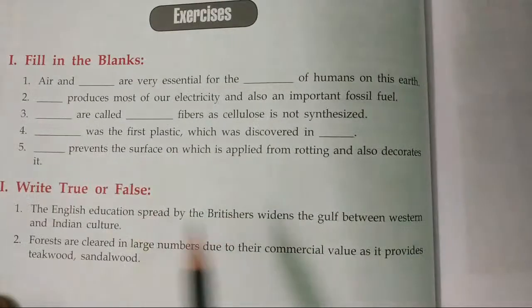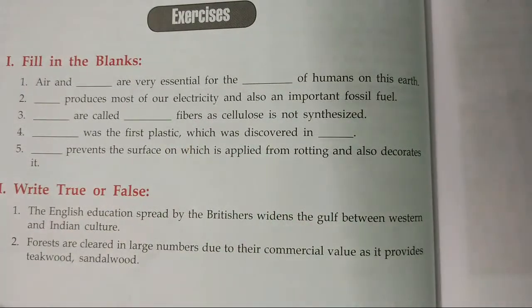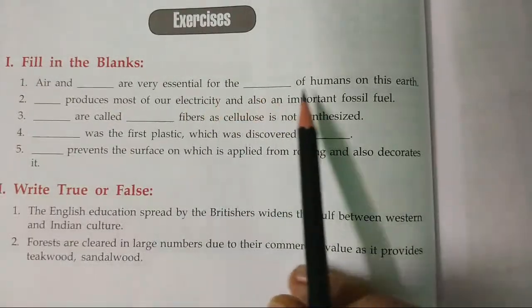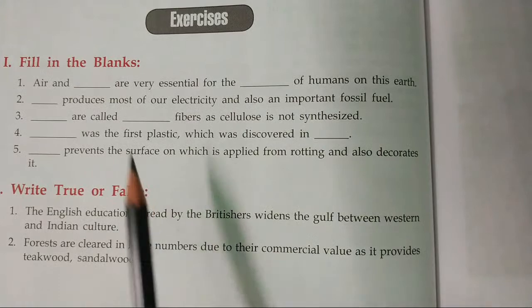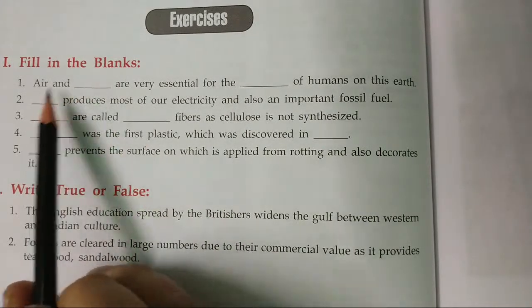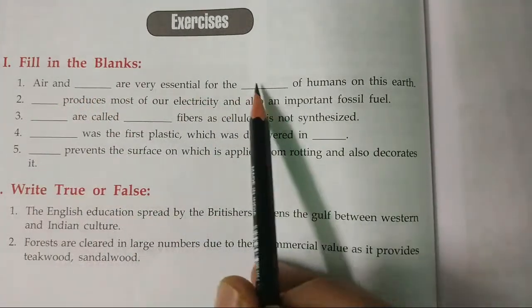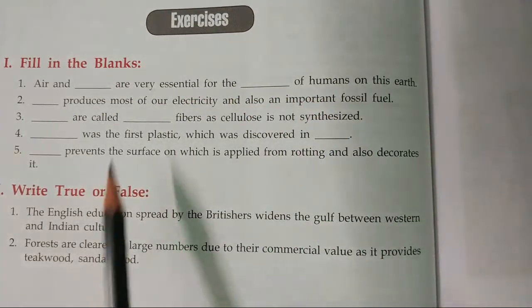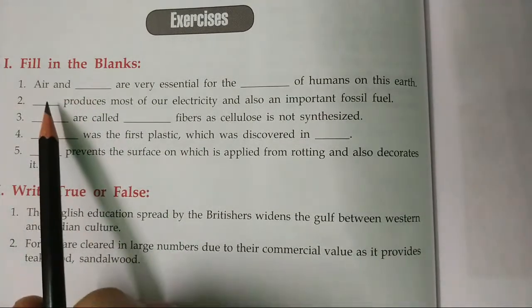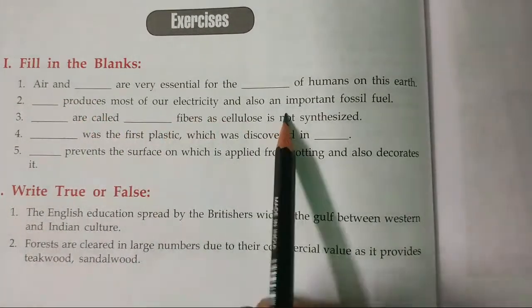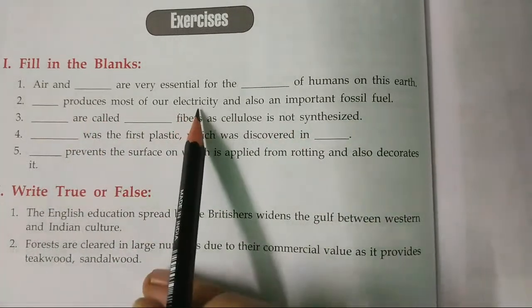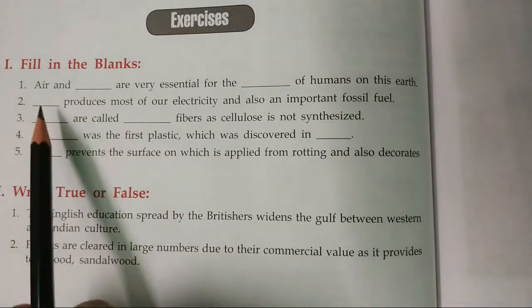Now let's quickly move to the exercise part. Some of the things described in the explanation are coming here. Air and water are essential for the survival of humans on this earth. We need air and water. Then, coal produces most of the electricity and is also a fossil fuel — coal is burnt to produce most of the fossil fuel.